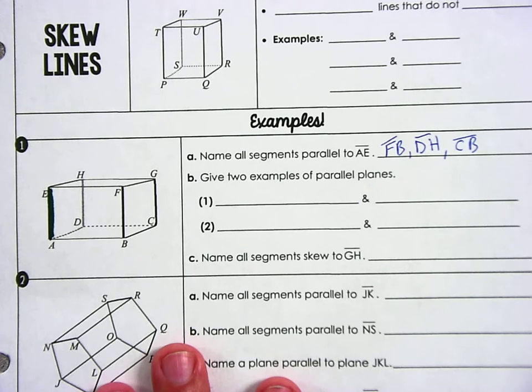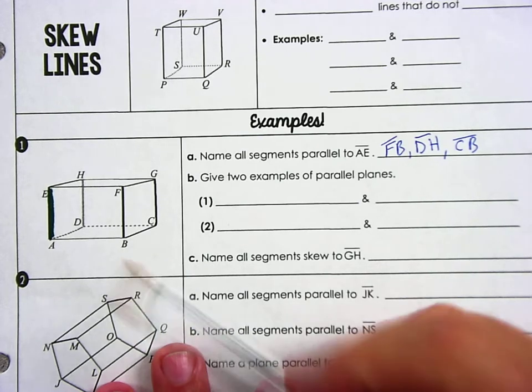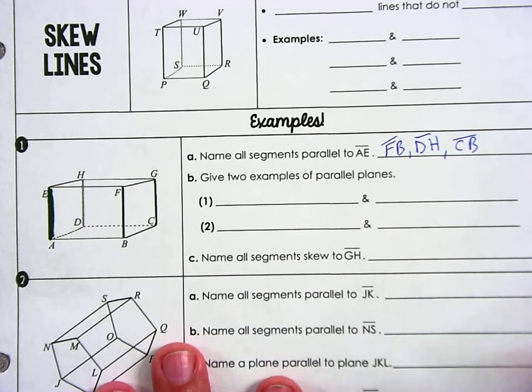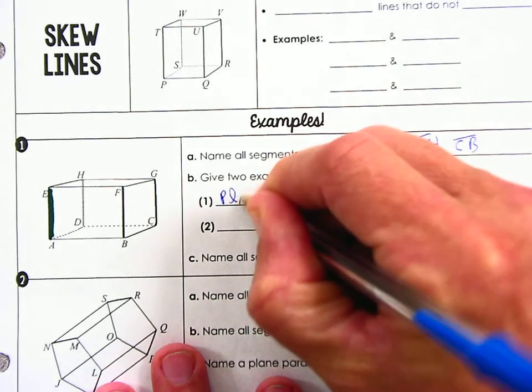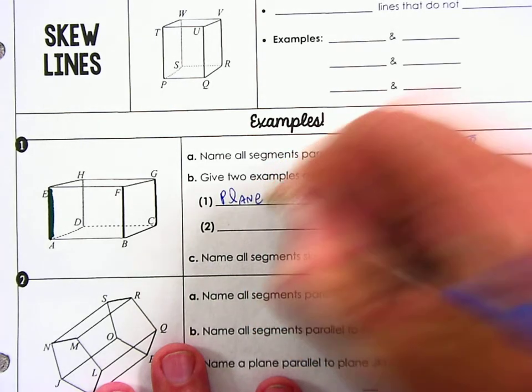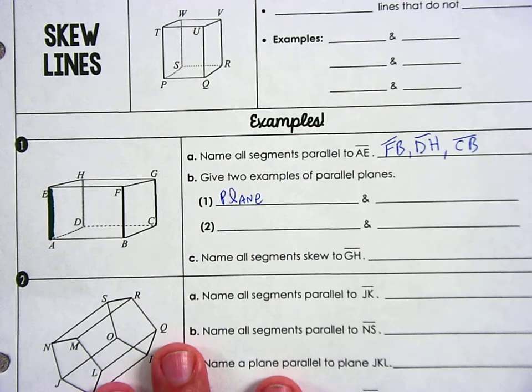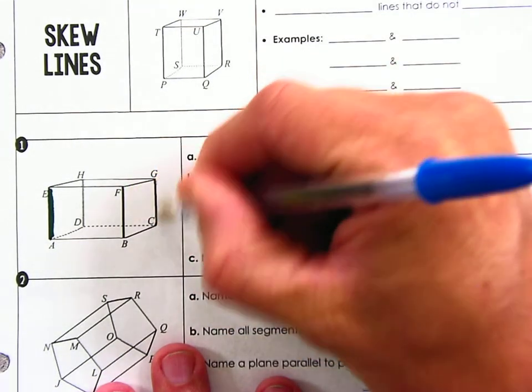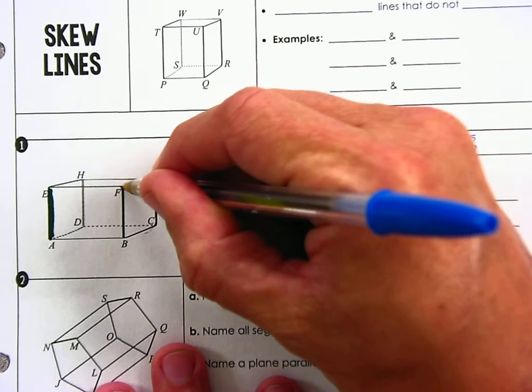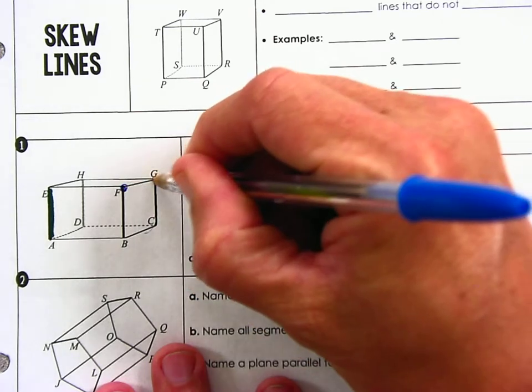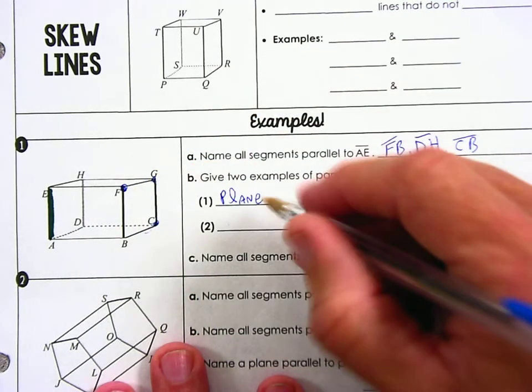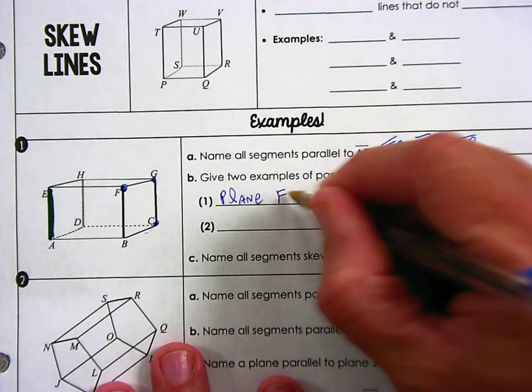Can you give me two examples of parallel planes? I'm glad that they asked for this because since they don't have any of those cursive capital letters, when you name a plane, go ahead and write the word plane and then you need to pick three points that are not all collinear. So all right, so look, you pick any three. I'm going to go FGC. Okay, FGC names this plane right here. So plane FGC, write the word plane again, and then you want to grab this one that's parallel over here.